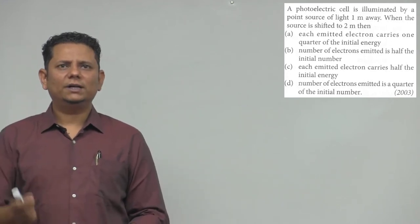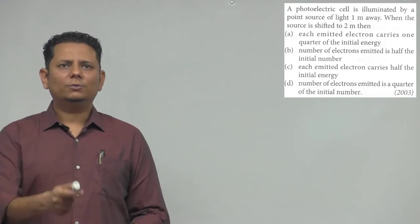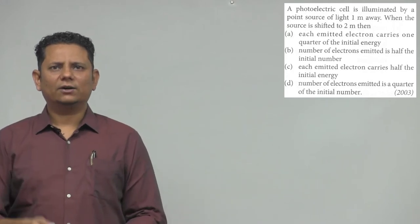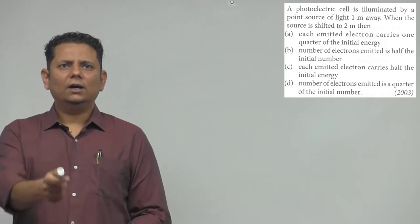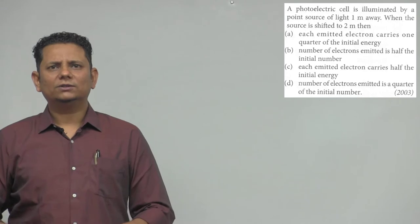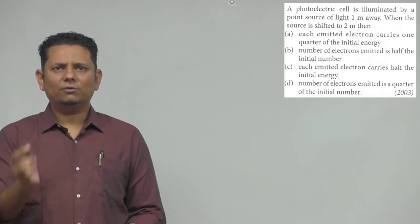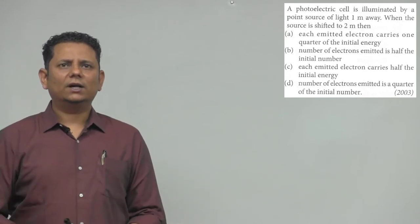Option B: number of electrons emitted is half the initial number. Option C: each emitted electron carries half the initial energy. Option D: number of electrons emitted is a quarter of the initial number.